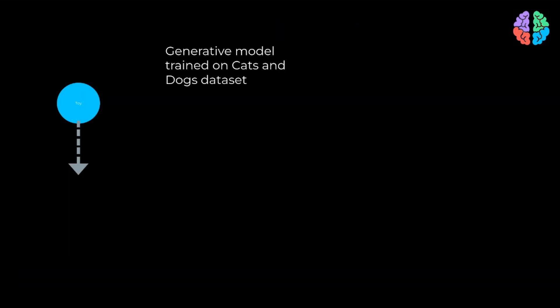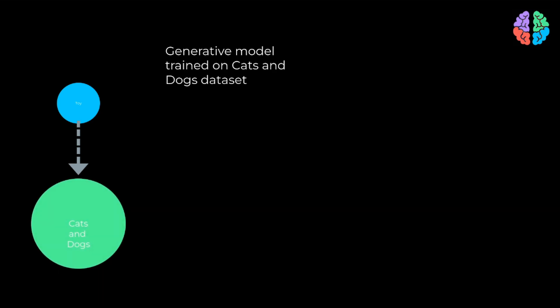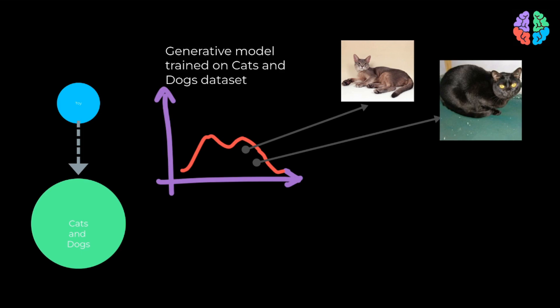Imagine we are scaling up this toy problem hundreds of fold with our training dataset containing thousands of examples of cats and dogs. With the generative model trained this way, we can pull out samples from the distribution learned by the model, and we will end up with images at the output.